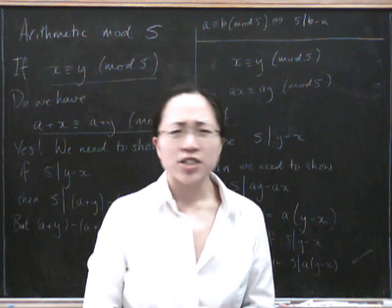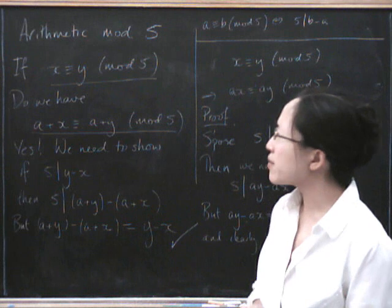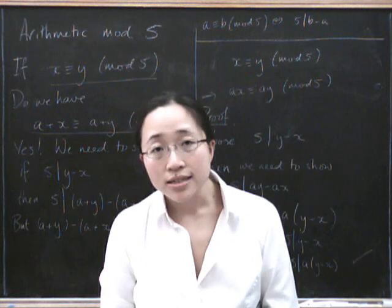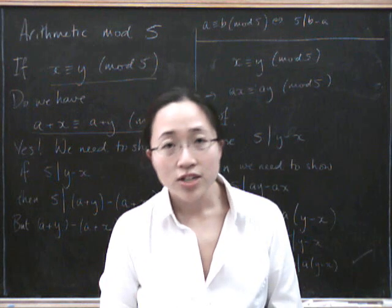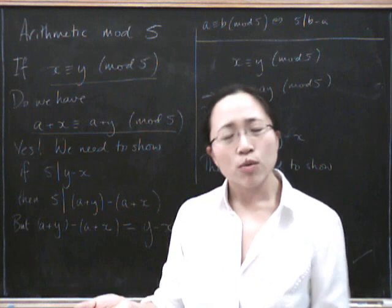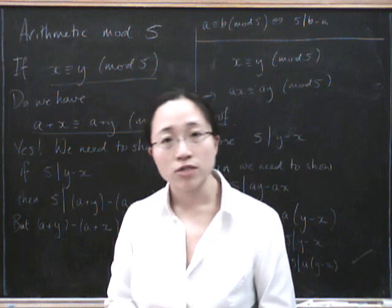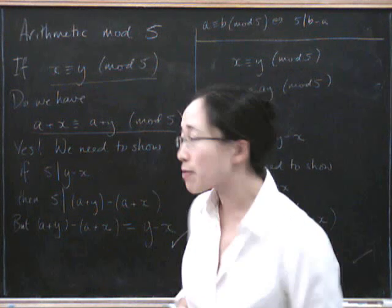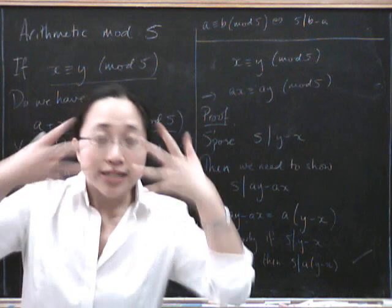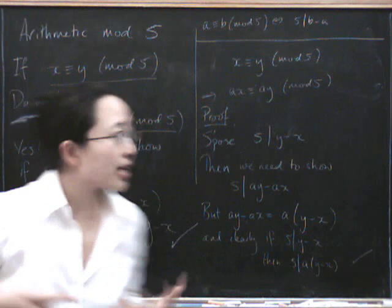So what about division? Well, division doesn't really make sense in the integers mod 5, does it? Because when you divide, you'd get fractions out. What does that mean? Maybe a bit later on we'll think about what division really means. But for now, let's think about whether we could have done this with different funny glasses on, mod any other number. Supposing instead of doing it mod 5, we'd done it mod 6.